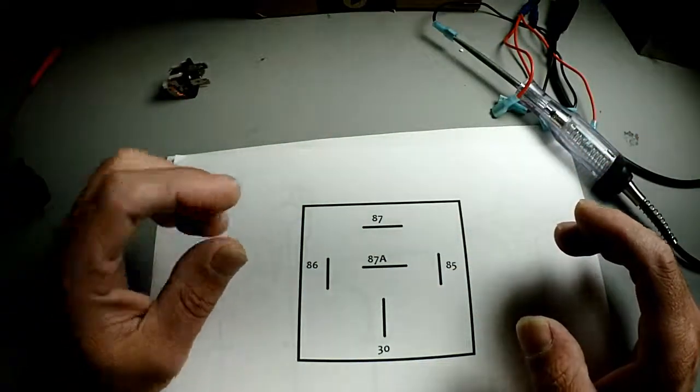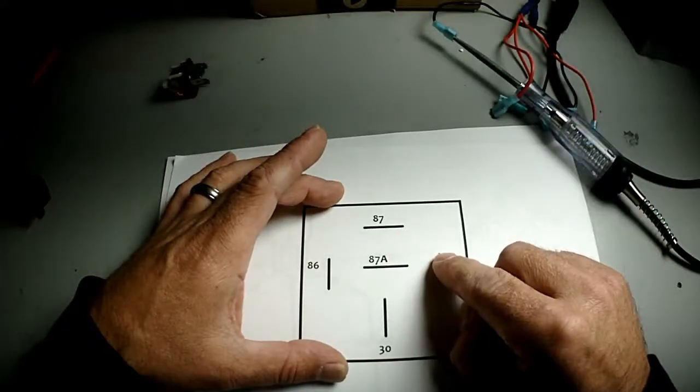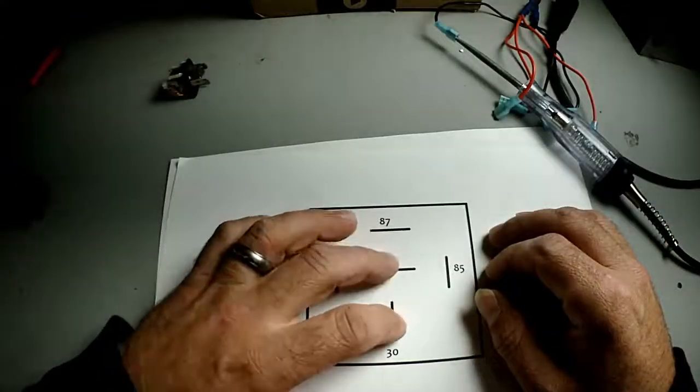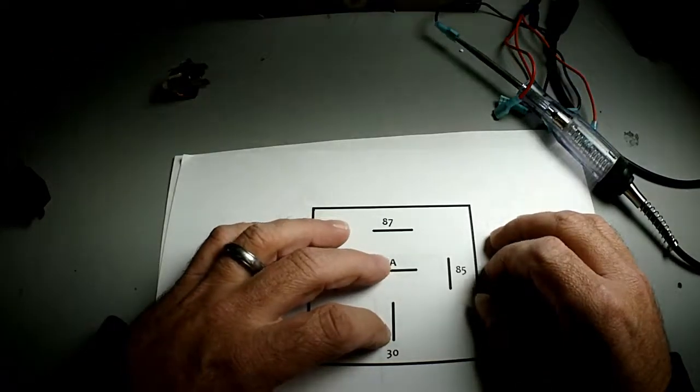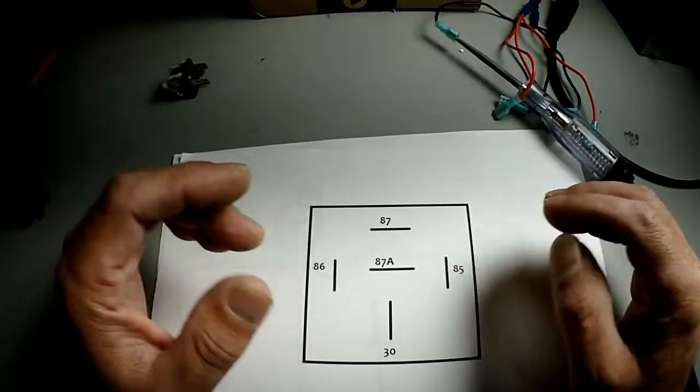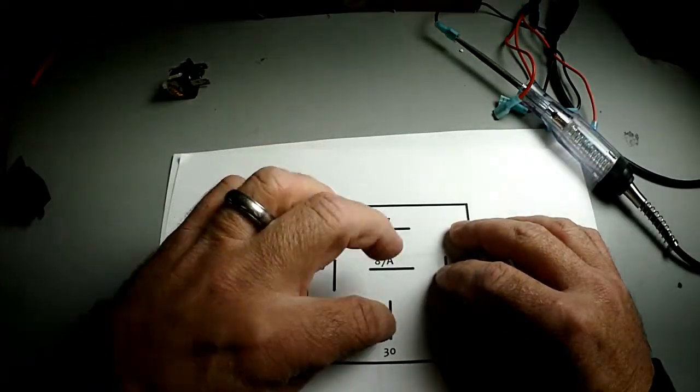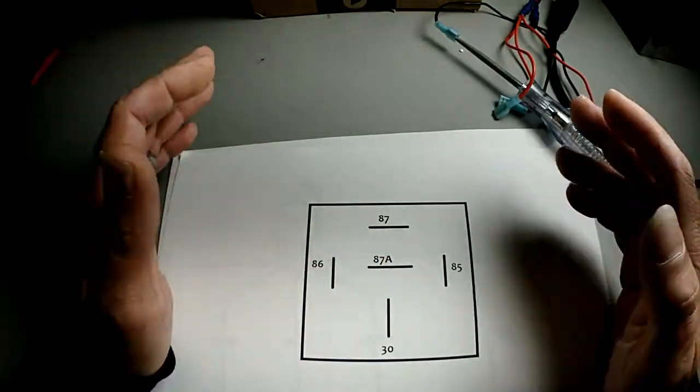If you need to use a negative trigger to charge a relay, just make sure that's positive. If you need a positive trigger to charge the relay, just make sure the other one's negative. 30 and 87A are tied together when there is no charge to the coil. As soon as you apply a charge to the coil, that's when 30 will now link to 87 and 87A will be isolated.